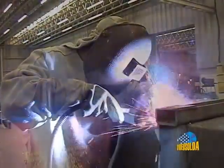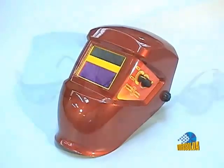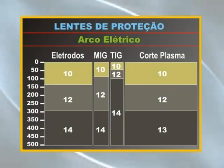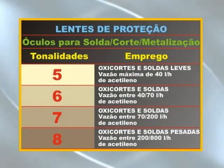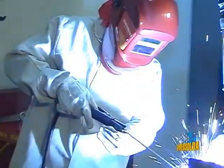Nos processos de solda e corte por combustão e arco elétrico, há a liberação de grande quantidade de energia na forma de radiação luminosa, infravermelha e ultravioleta, em níveis muito superiores aos tolerados pelo corpo humano. Nesses processos, é obrigatório o uso de máscaras e óculos com lentes específicas para cada tipo de aplicação. Outras partes do corpo também devem ser protegidas com o uso de EPIs — equipamentos de proteção individual.